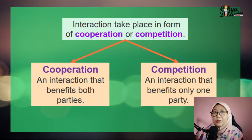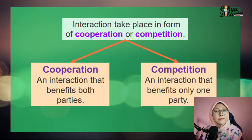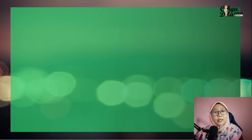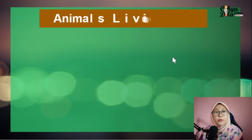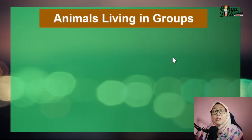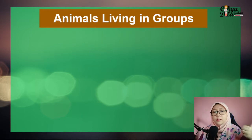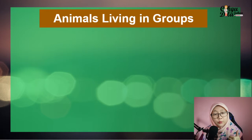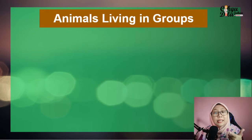It's the same as when you and your friends compete to get something — only one can win the competition. Next, we move to the types of animals. We have two different types: animals that live in a group, and animals that live in solitary, meaning they live alone.